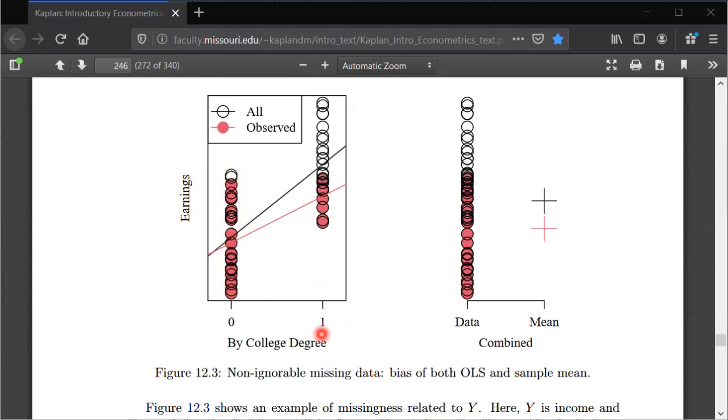But when we look at the college degree group, similar to in the unconditional case, we're missing over half of the highest earnings observations. And so if we look at the sample mean of observed values, it's much below the overall conditional sample mean for this group.